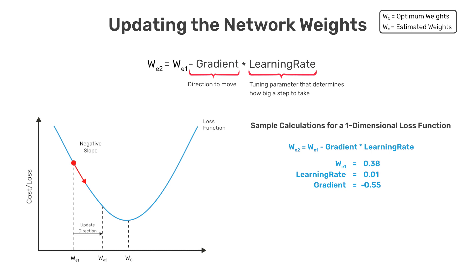So using the update equation above, we can easily compute a new estimate for the weight, which we'll refer to as WE2, which is 0.3855. This calculation was simplified because we're only working in a single dimension, but this is easily extended to multiple dimensions.